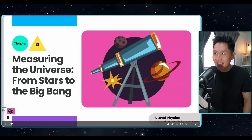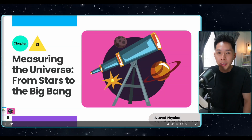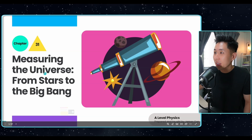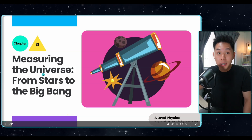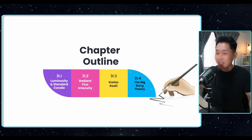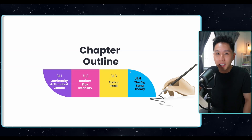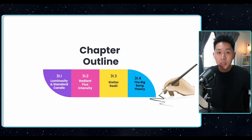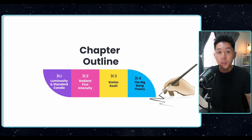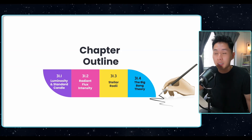Hello everyone, welcome to the last chapter of A-Level Physics, Chapter 31: Measuring the Universe. This is the chapter outline — you'll be introduced to many different terms that are used in astronomy.